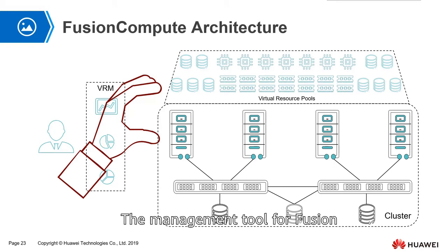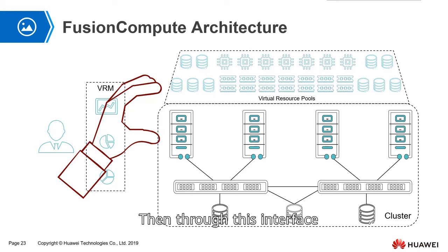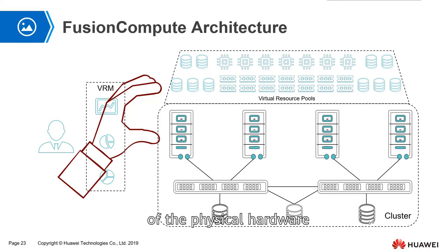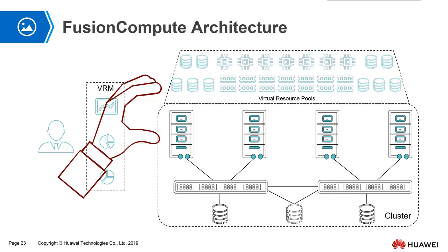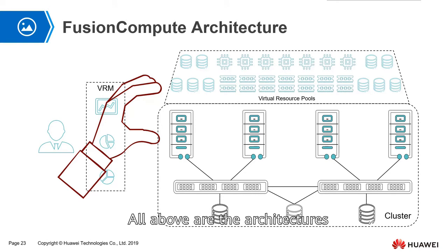The management tool for Fusion Compute is VRM. VRM can provide administrators and users with a graphical web interface. Through this interface, we can see the state of virtual machines, the state of virtual resource pools, the information of physical hardware and virtual machines, and so on. There is also a cluster, which provides computing resources, storage resources, and network resources. All of the above make up the architecture of the entire Fusion Compute.